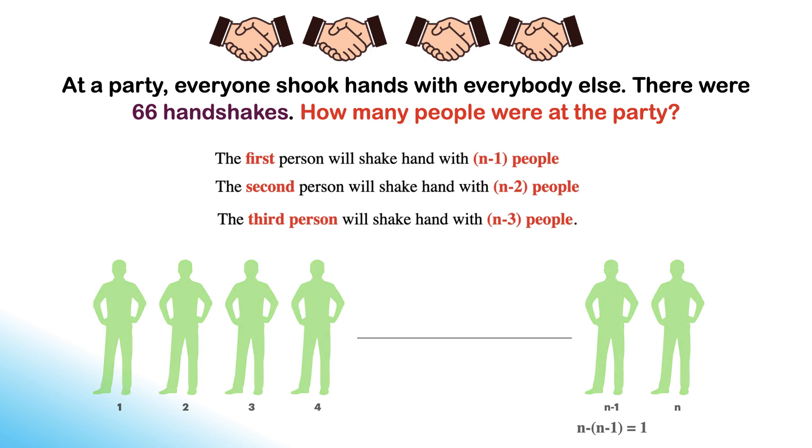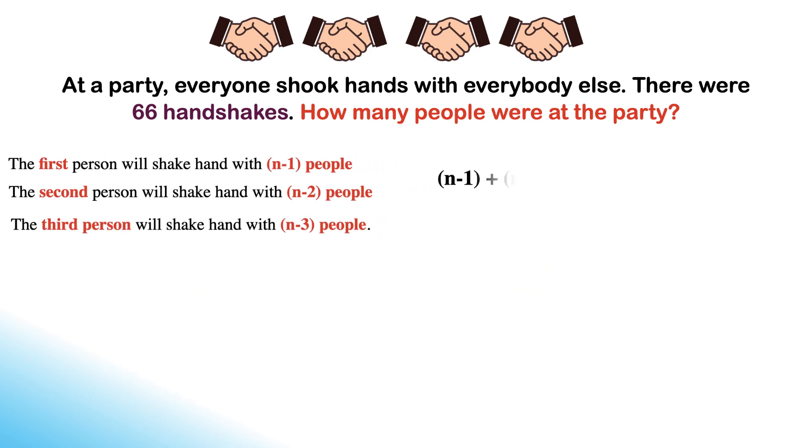Now add all the number of handshakes: n minus 1 plus n minus 2 plus n minus 3 plus so on till 3 plus 2 plus 1.